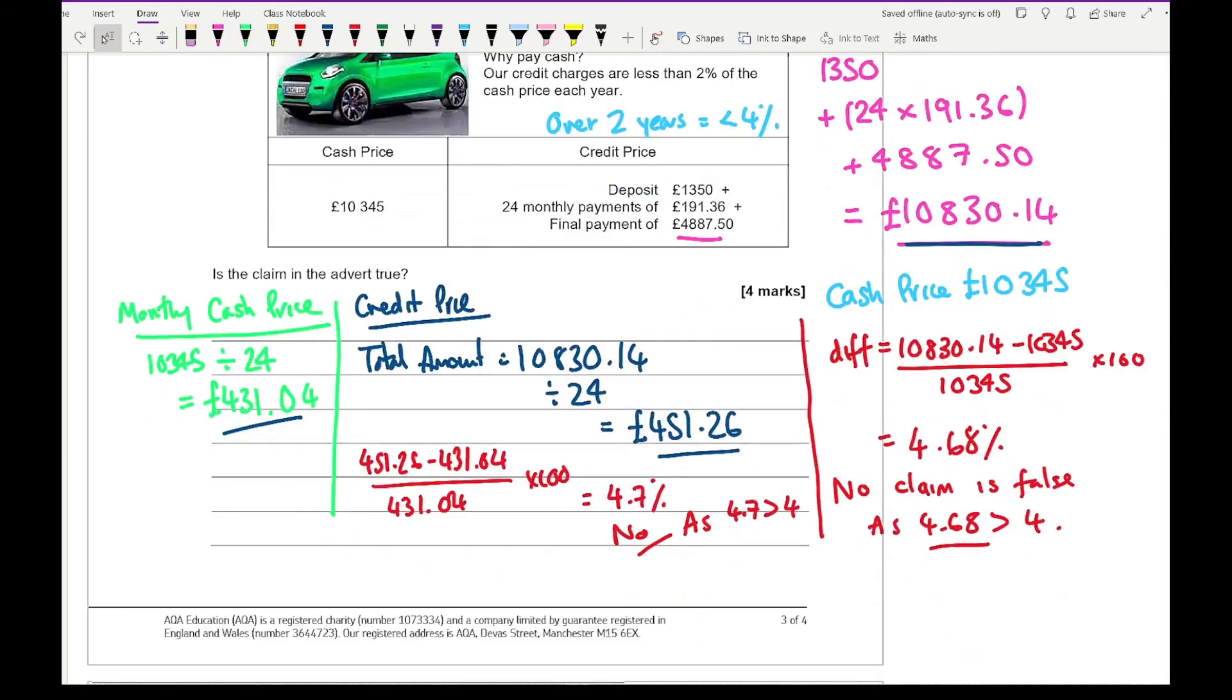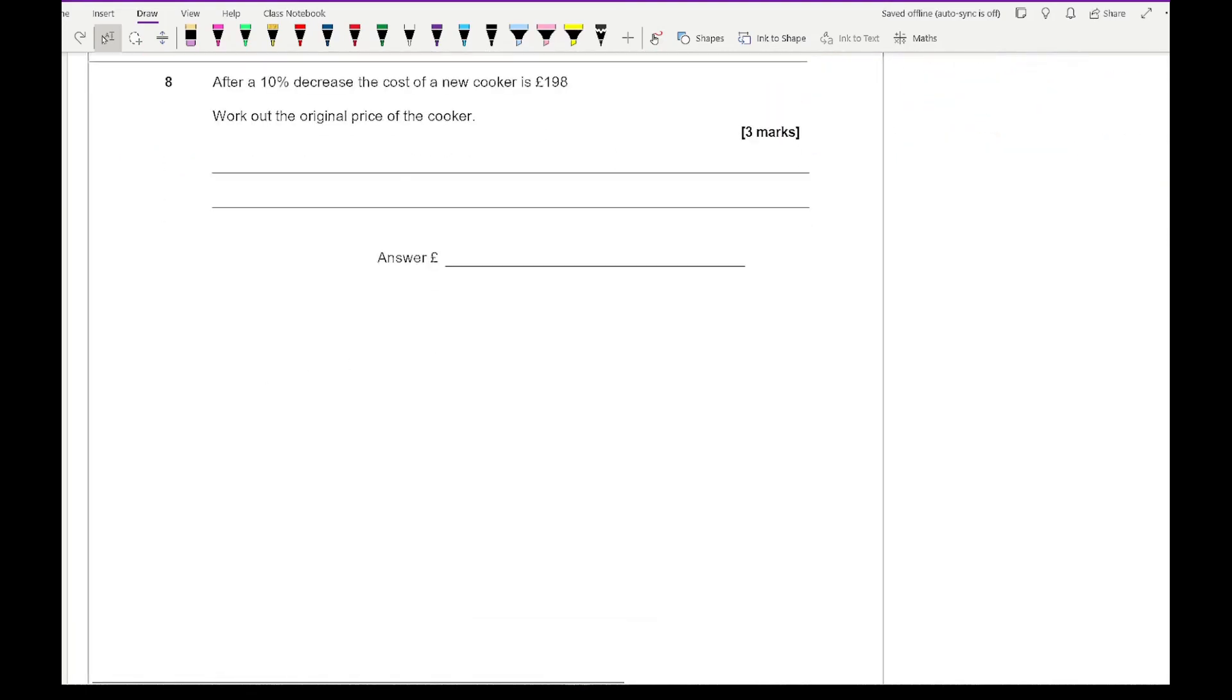Moving on to our last question, it says after a 10% decrease the cost of a new cooker is £198. Work out the original price of the cooker. The old price to the new price has been decreased by 10%. A 10% decrease as a decimal is 100 take away 10 which equals 90, and that as a decimal is 0.9.